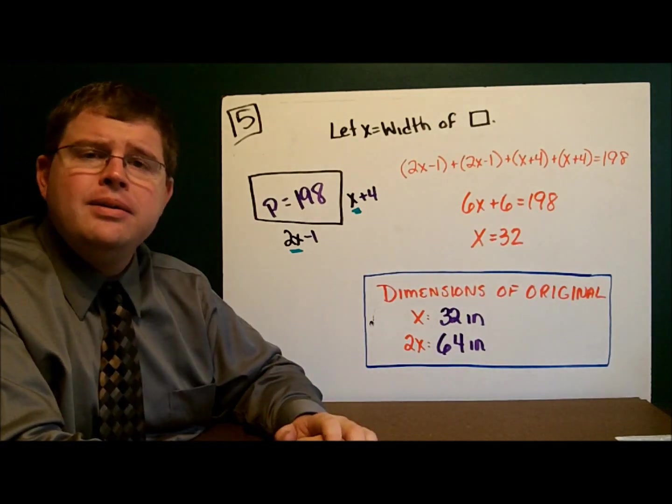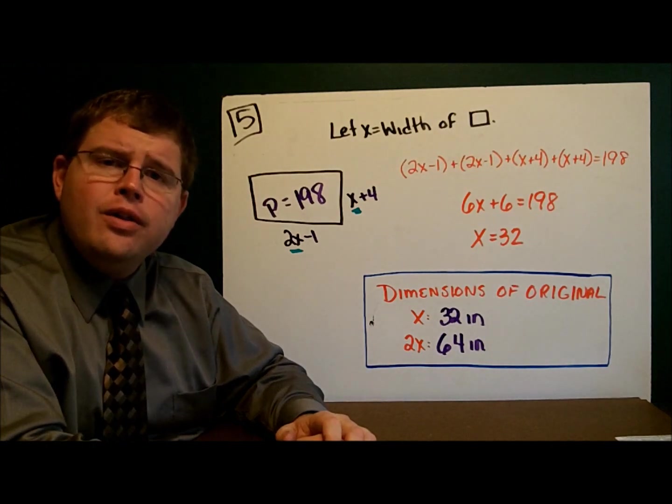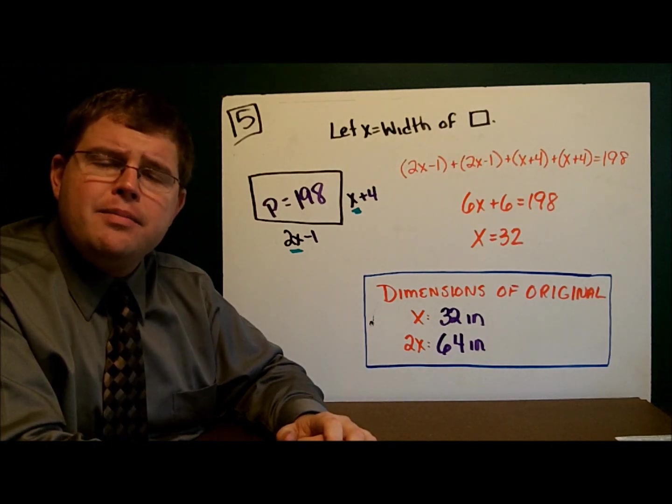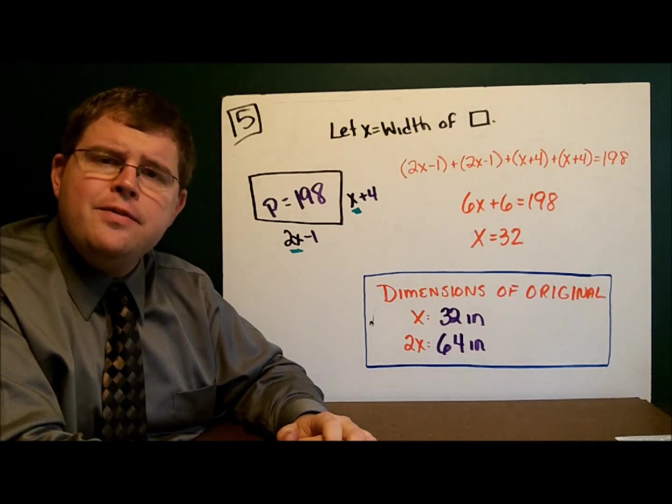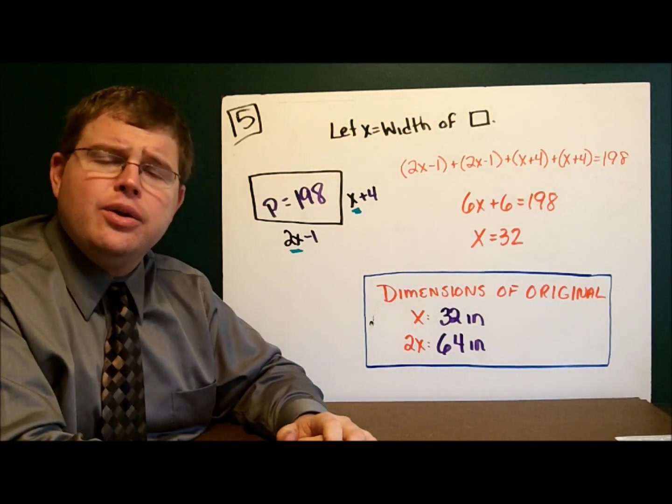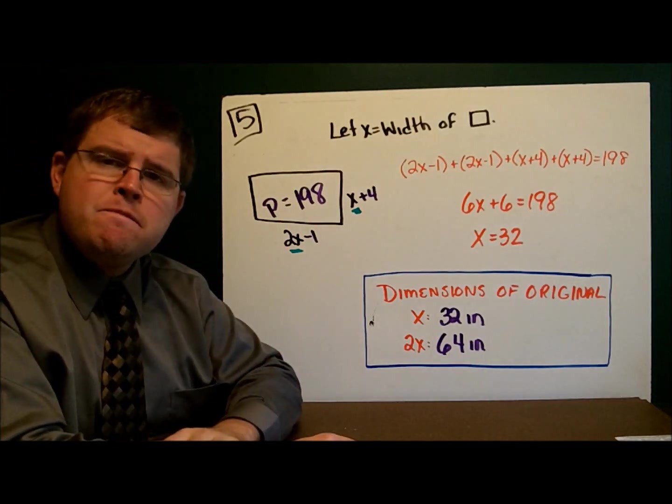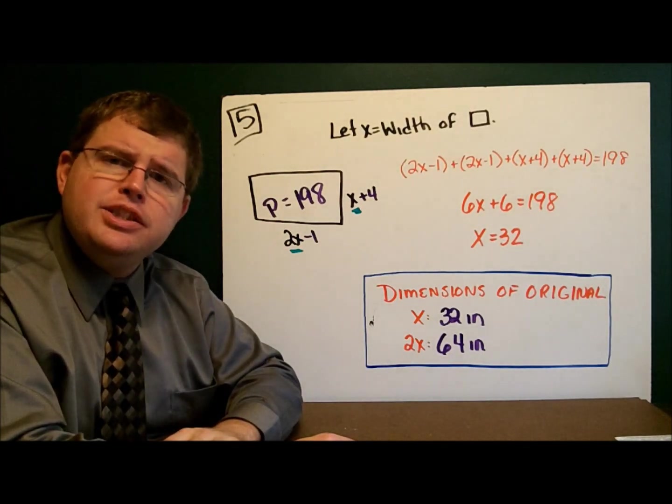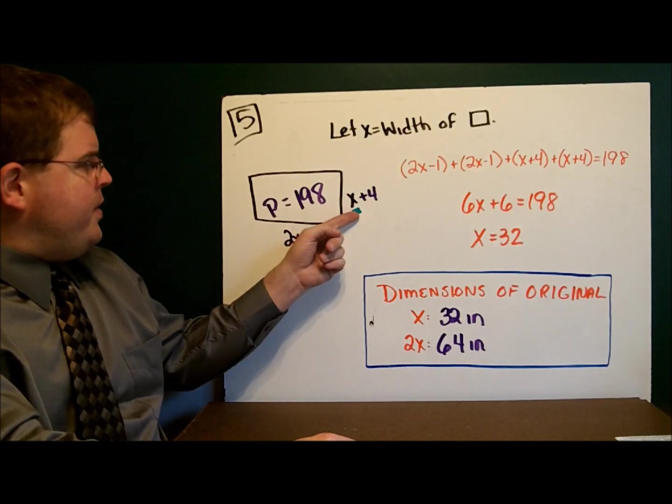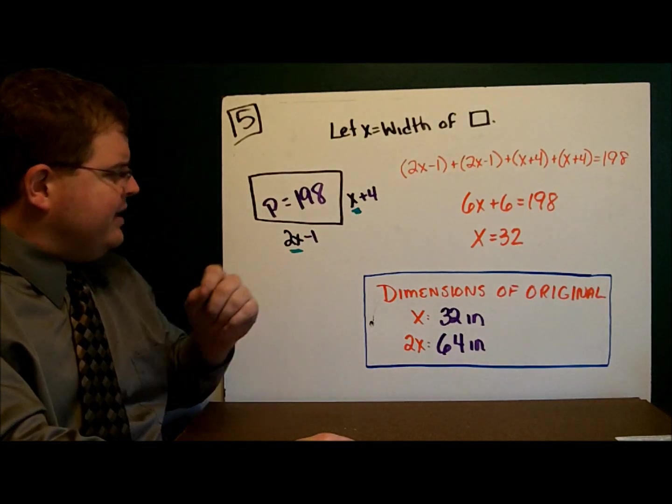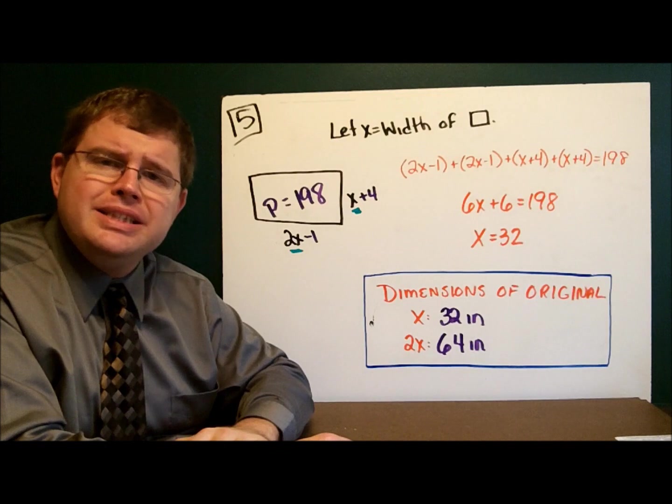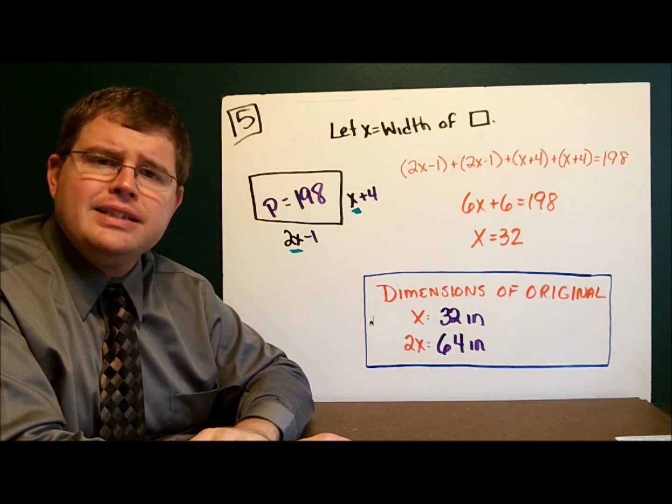Nothing new there. However, be careful. They're not asking you for the dimensions of the new rectangle. They're asking you for the dimensions of the original rectangle when it was x and 2x. And so the dimensions of the original rectangle were 32 and 64. So be sure that you always answer the question that they're asking you.